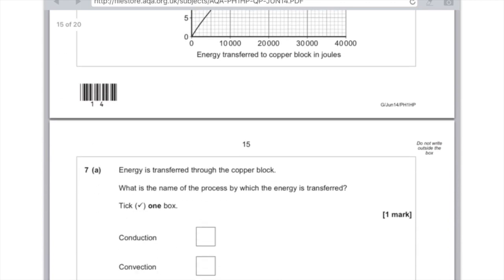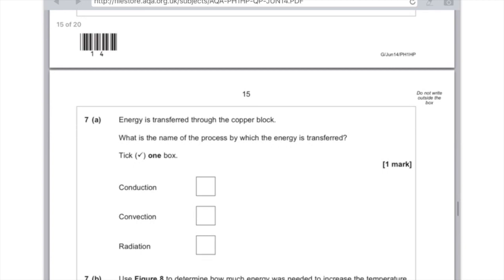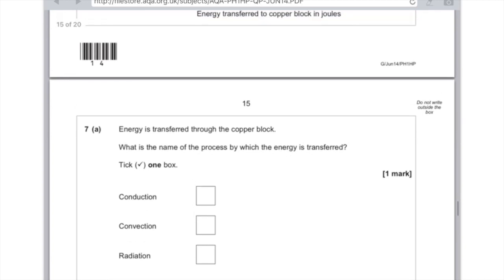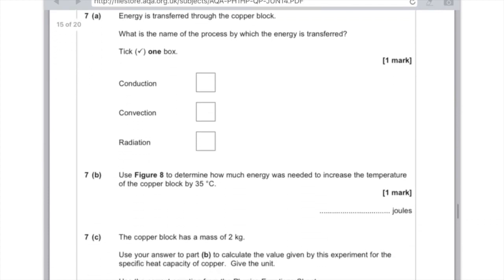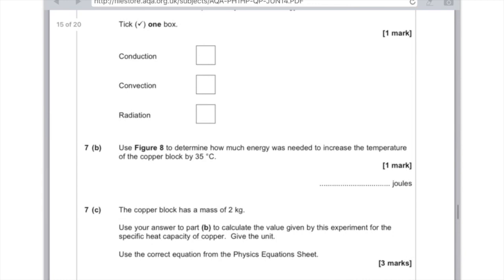Energy is transferred through the copper block. What is the name of the process? Conduction, convection, or radiation? It's by conduction because the heat source is causing the electrons to vibrate and pass on the energy.